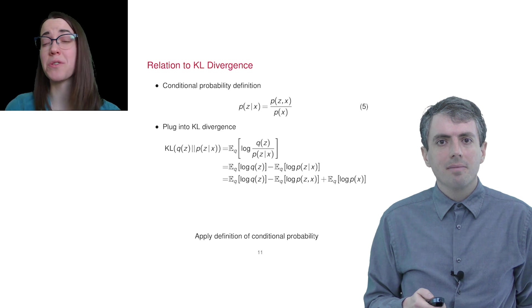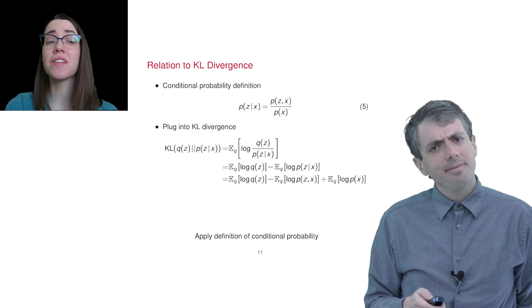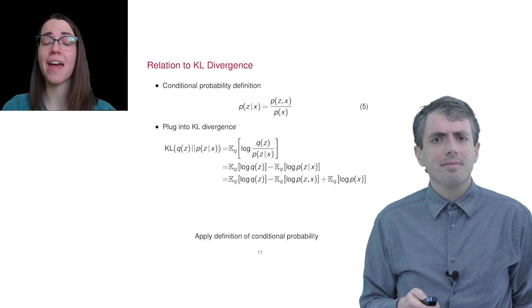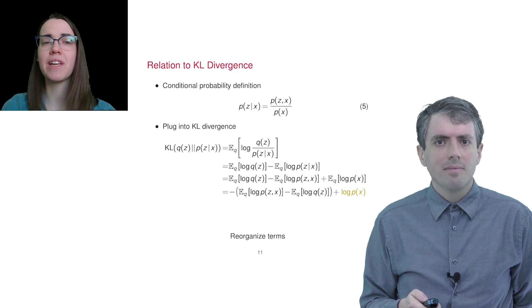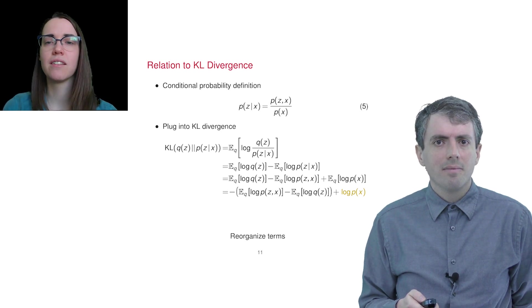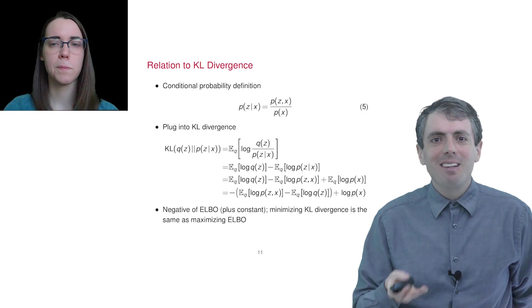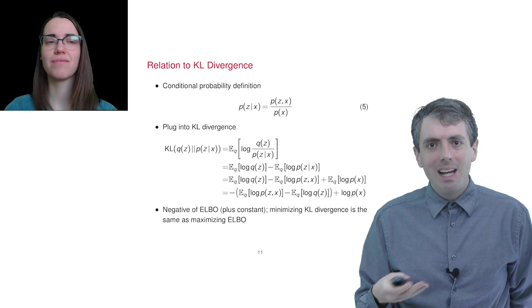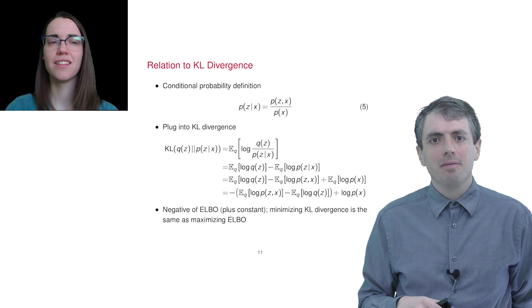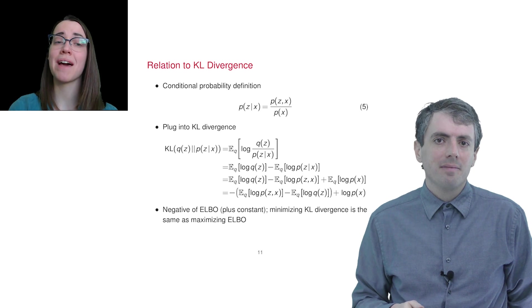But actually, we can totally drop that part because it doesn't depend on q at all. q is the distribution over latent variables, so if we have terms that don't depend on q, then they're effectively constants for us and there's no point keeping them around for optimizing. When you do this, does the term look familiar? It's just the negative of the ELBO from before. The expectation of the log joint under q and the entropy of q. Exactly. So minimizing KL divergence is the same as maximizing the ELBO.